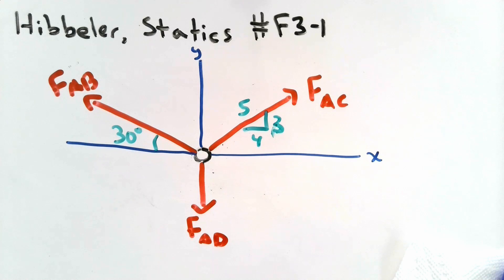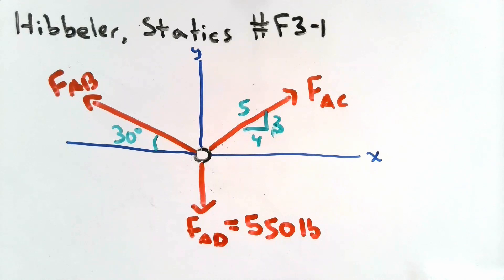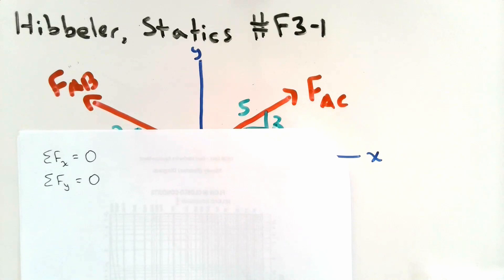Let's analyze the free body diagram and identify our unknowns. We know the crate has a weight of 550 pounds. Because the crate is the only thing exerting a weight on cable AB, the force in AB equals 550 pounds — so that's one known. We still don't know the forces in cables AC and AD. However, we know the system is in equilibrium, meaning the vector sum of all forces equals zero. We'll split everything into X and Y components and apply the equations of equilibrium: the sum of forces in X equals zero, and the sum of forces in Y equals zero.